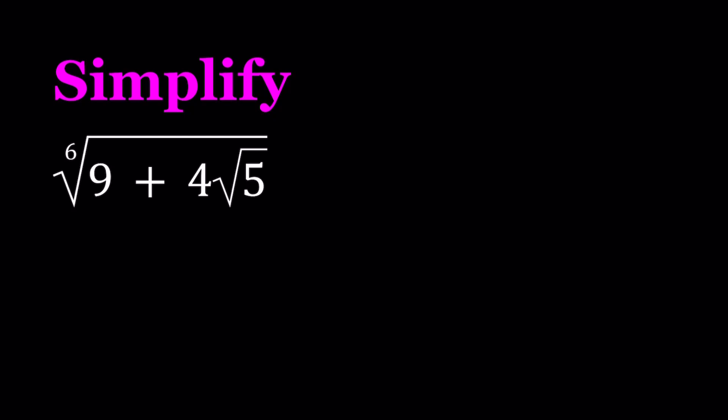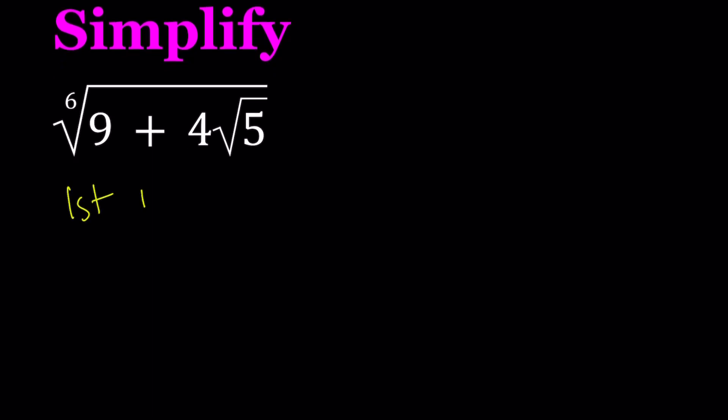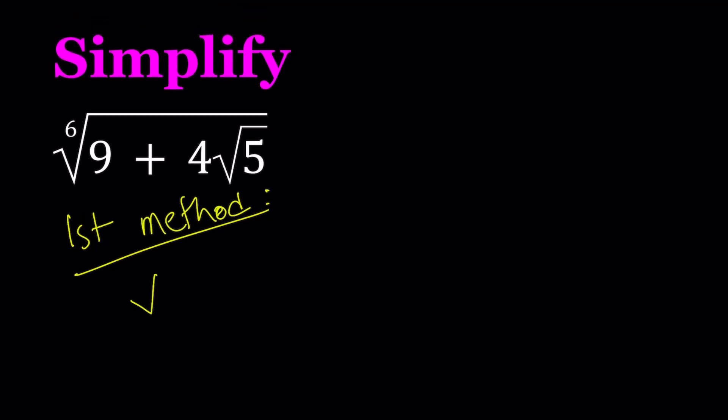I'll be presenting two methods, but in the second method, I'll also talk about some alternative paths. My first method basically involves using the binomial theorem. If we have a nice solution for this expression, then the sixth root of 9 plus 4 root 5, we should be able to write it as a plus b root 5, where a and b are rational numbers.